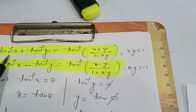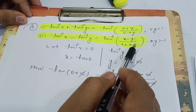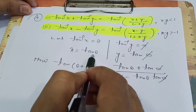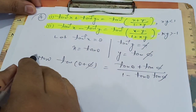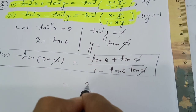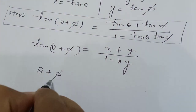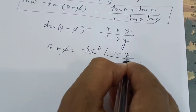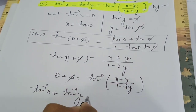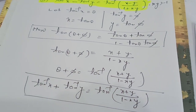The fourth property is the tan addition formula: tan⁻¹(x) + tan⁻¹(y) = tan⁻¹((x+y)/(1-xy)), and tan⁻¹(x) - tan⁻¹(y) = tan⁻¹((x-y)/(1+xy)). To verify: let tan⁻¹(x) = θ and tan⁻¹(y) = φ, so x = tan θ and y = tan φ. Using the class 11 formula tan(A+B) = (tan A + tan B)/(1 - tan A·tan B), we get tan(θ+φ) = (x+y)/(1-xy), so θ + φ = tan⁻¹((x+y)/(1-xy)), confirming the property.